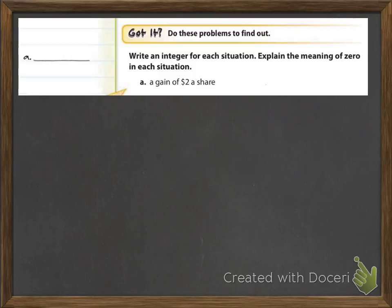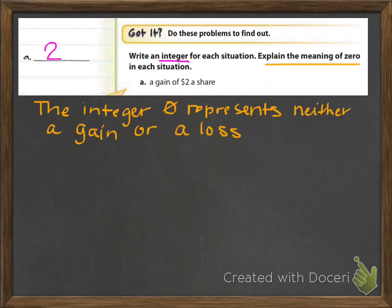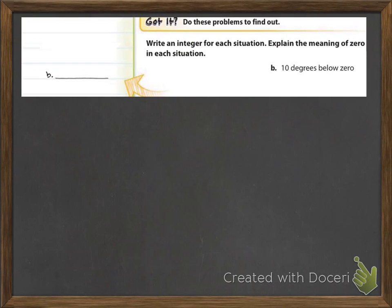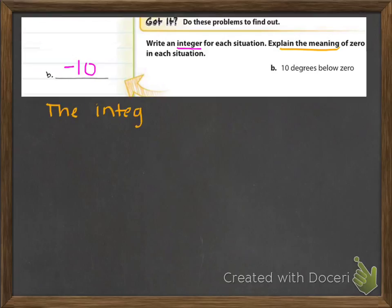Now you're going to try these on your own — it says Got It, do these problems to find out. Before you do, underline where it says write an integer, and also underline explain the meaning of 0 in each situation. For the first example, the integer you should have written was 2, and the integer 0 represents neither a gain nor a loss. For number 2 — 10 degrees below 0 — your integer is negative 10, and the integer 0 represents 0 degrees.